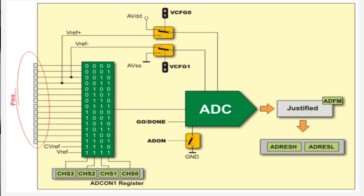We will also require the GO/DONE pin. GO means start of conversion — you are giving the command to the ADC to start the conversion. DONE indicates the end of conversion, that analog-to-digital conversion has taken place. The digital result obtained will be stored in one of the registers of the internal ADC of the PIC microcontroller.